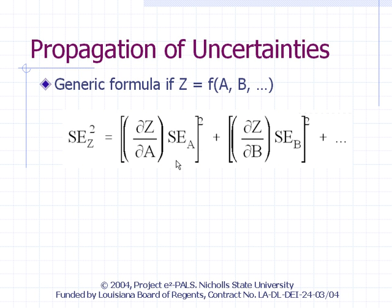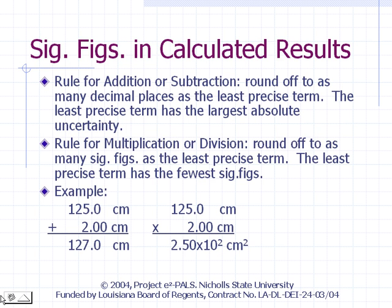The formula for propagation of uncertainties is derived from calculus. If Z is calculated from A, B, and so on, the square of the standard error in Z is the sum of contributions from each variable: the contribution from A is the partial derivative of Z with respect to A, times the standard error in A, all squared. Propagation of errors can be cumbersome and is often only done in formal reports requiring thorough error analysis.